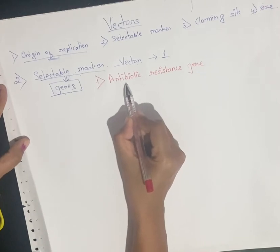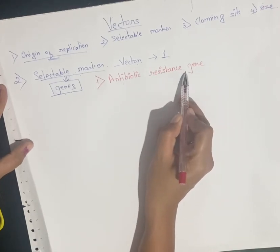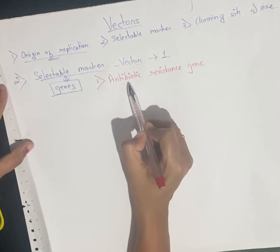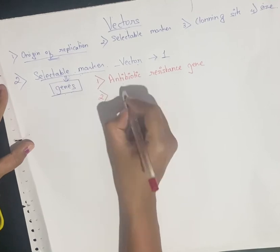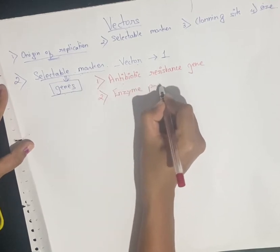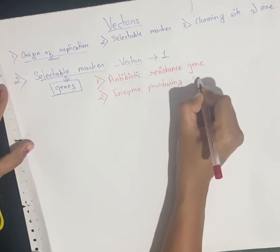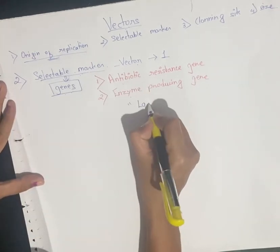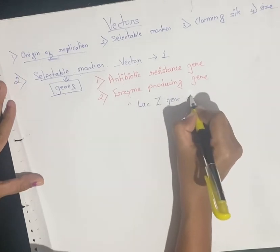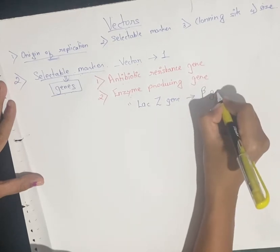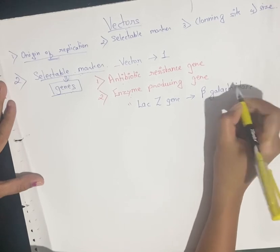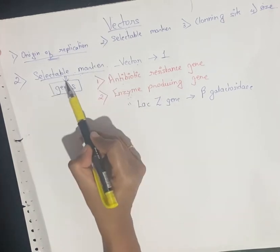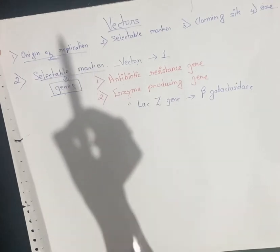A vector should contain an antibiotic resistance gene. That antibiotic can be penicillin, ampicillin, tetracycline, and so on. There should be at least one antibiotic resistance gene. The second is an enzyme-producing gene — there is one gene called the lacZ gene that produces the enzyme beta-galactosidase. At least one of these genes should be present in the vector to identify the alien DNA in the plasmid.